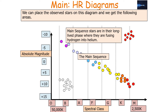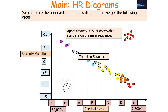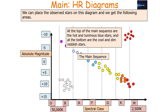Main sequence stars are in their long-lived phase where they are fusing hydrogen into helium. Our Sun is currently on its main sequence. Approximately 90% of observable stars in our universe are currently on the main sequence. At the top of the main sequence are the hot and luminous blue stars, and at the bottom are the cool and dim reddish stars.